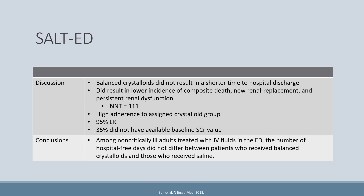However, when looking at the composite outcome of death, new renal replacement, or persistent renal dysfunction, they did see a significantly lower incidence in the balanced group, with an absolute rate reduction yielding a number needed to treat of 111. It should also be noted that 35% of patients did not have an available baseline serum creatinine, so an estimated baseline was computed based on a protocol-specific calculation and utilized to determine the primary and secondary renal outcomes.